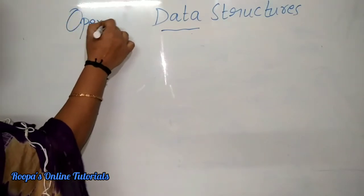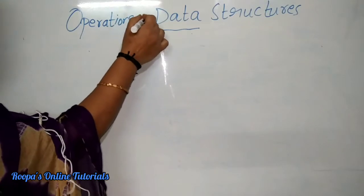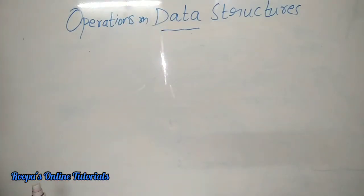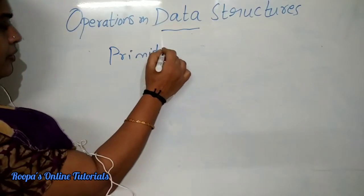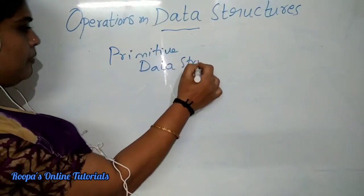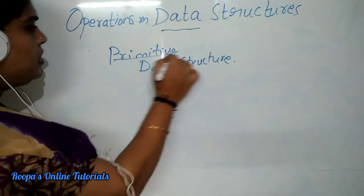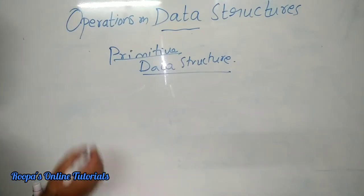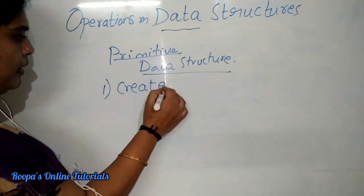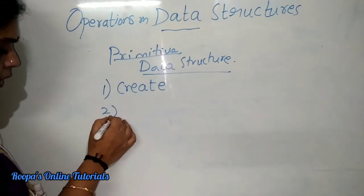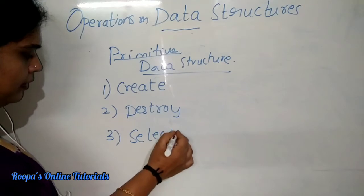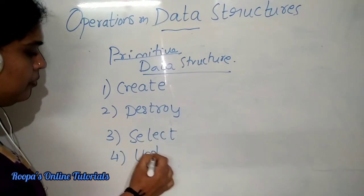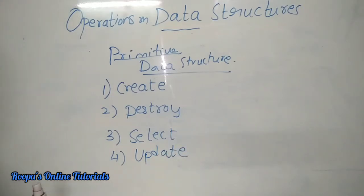Today's topic is operations on data structures — how we are going to use our data structures in a better way. The various operations that can be performed on a primitive data structure: machine-dependent instructions are known as primitive data structures. The operations on primitive data structures are: create, destroy, select, and update. The name itself tells you what we can do.